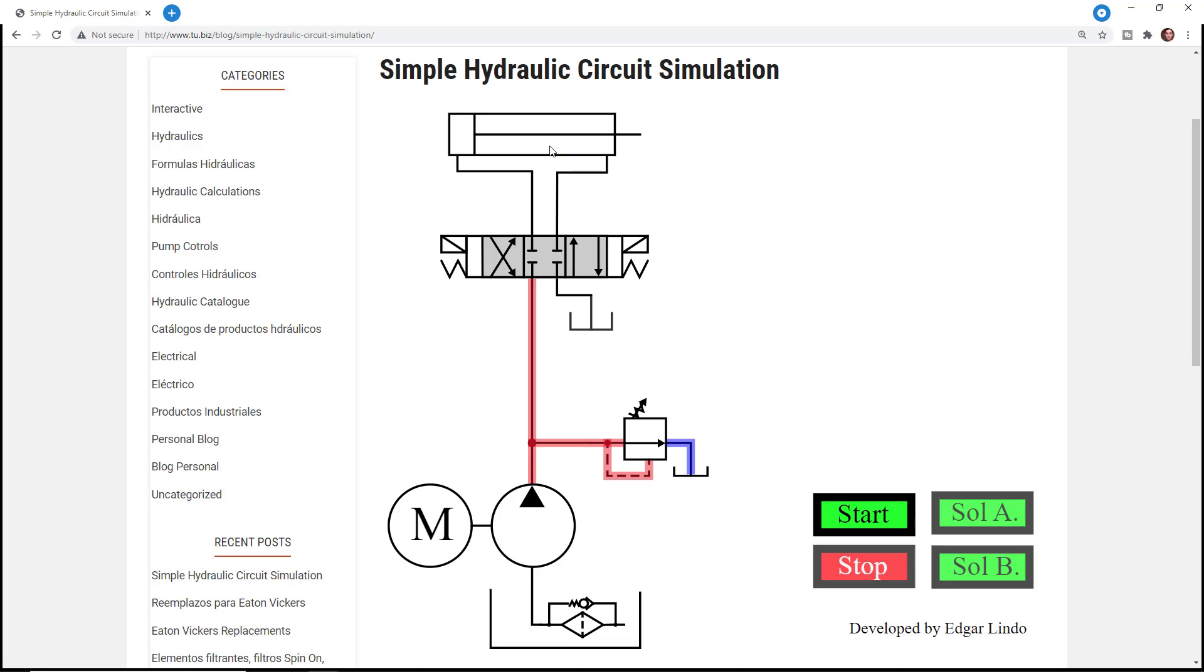So let's start. Right now what you do is click A. You see the different flow paths at the red line when the cylinder is extending.